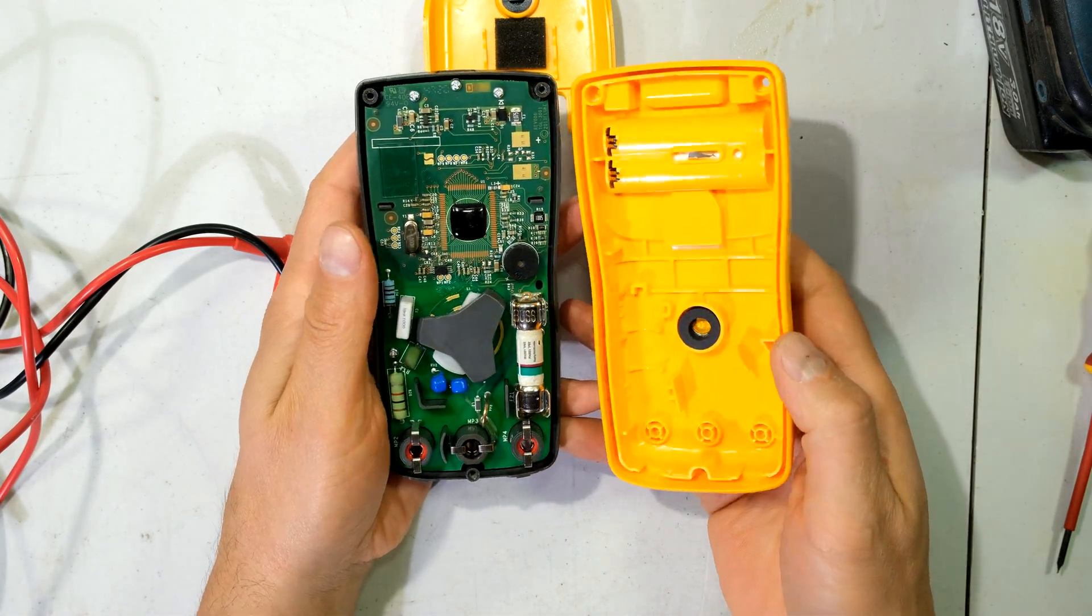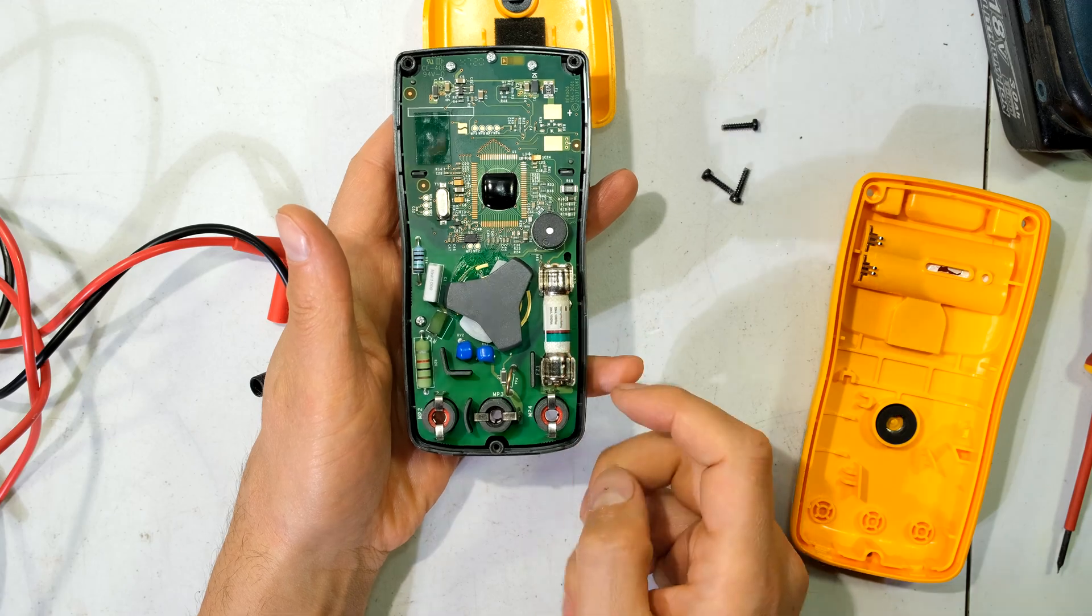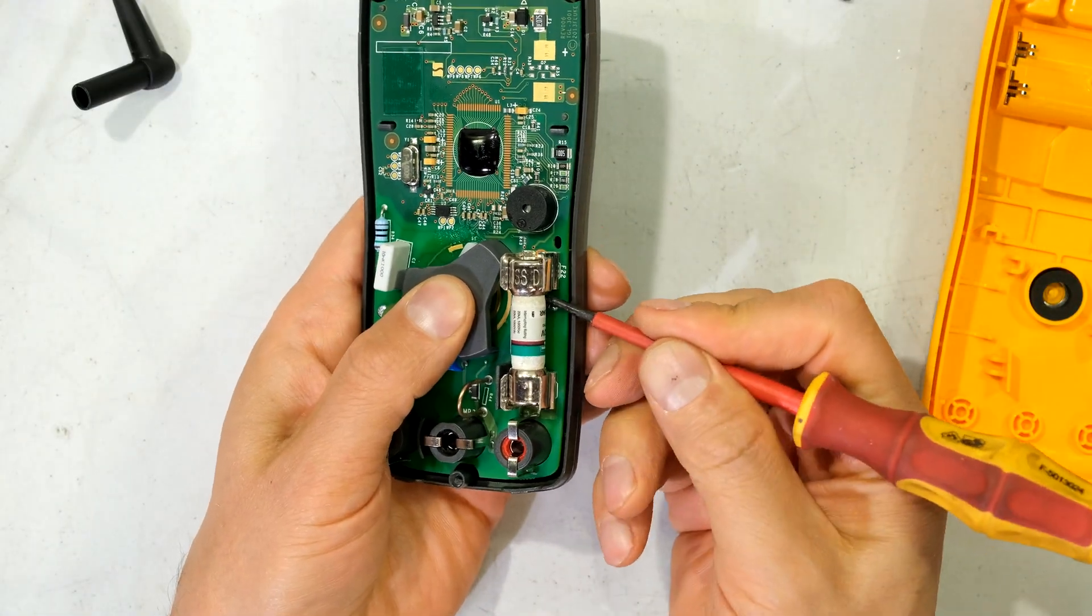Right, so the two sides have separated. There is the fuse. Right, so I'm just going to remove the fuse.